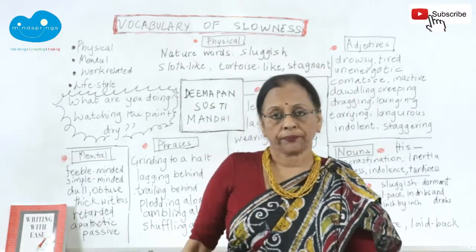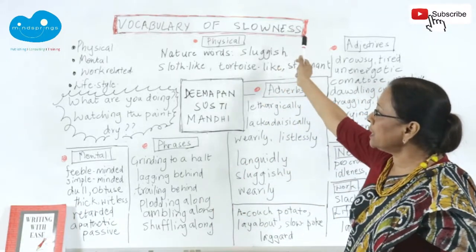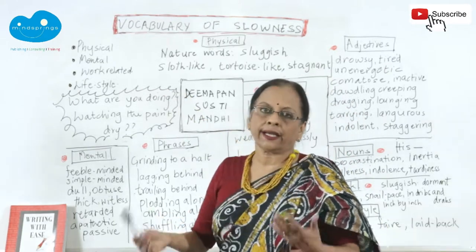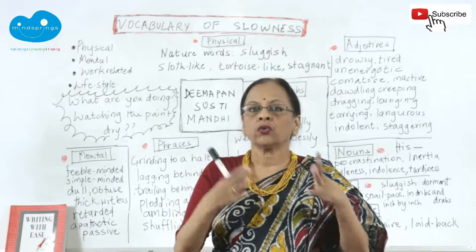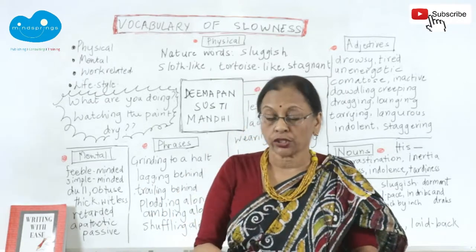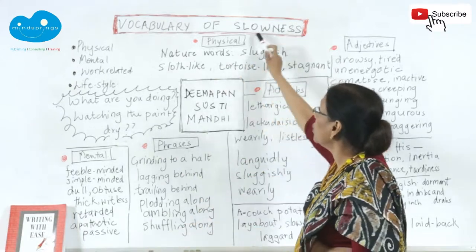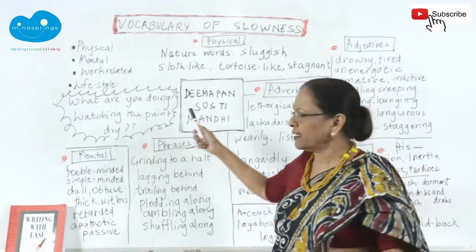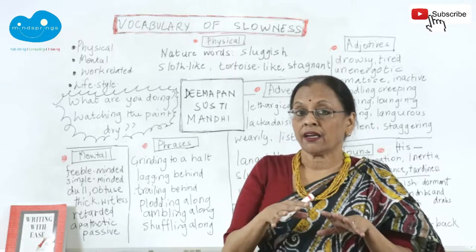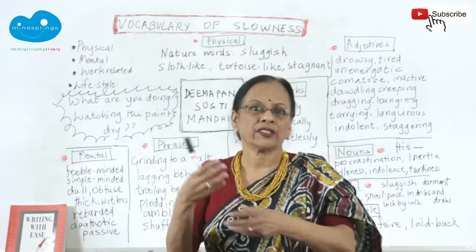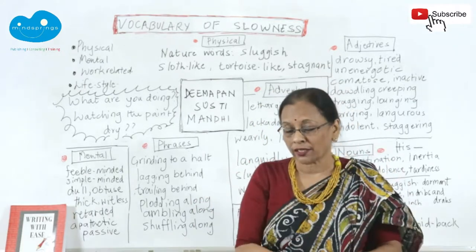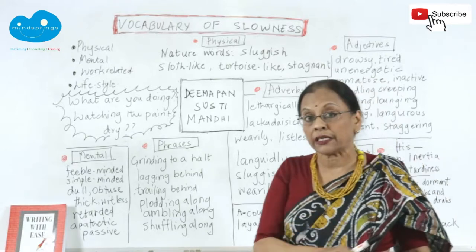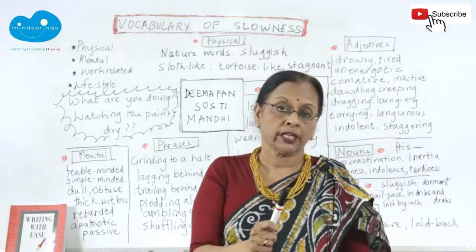अगर ये words आप याद रखोगे और फिर उनके माध्यम से सीखेंगे तो बेहतर याद रख पाओगे। Every word has got usage — it's got a physical, mental, work related and a lifestyle aspect. ये चार चीजें हैं जिनके लिए अलग-अलग words रहते हैं। In usage they may mean the same thing — all of them will mean slowness. For example, धीमापन, सुस्ती और मंदी में थोड़ा-थोड़ा फर्क है। Although we just say slow, all these words have to be used differently, इसलिए ध्यान से सुनिए।